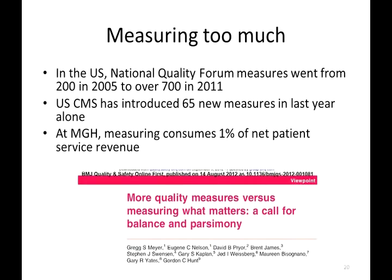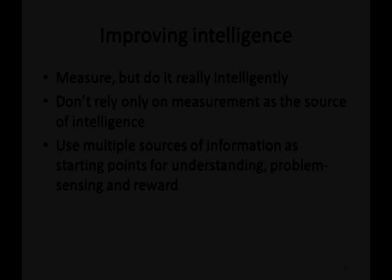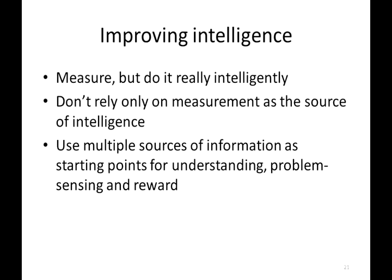Another problem is that we are probably measuring far too much. A recently published paper showed that in the US National Quality Forum, measures went from 200 in 2005 to over 700 in 2011. The US Centre for Medicare and Medicaid Services introduced 65 new measures in the last year alone. At Massachusetts General Hospital, measuring consumes one percent of net patient service revenue. It's very important to measure, but if we're going to measure we need to do it intelligently, and we need to avoid relying on measurement as the sole source of intelligence.